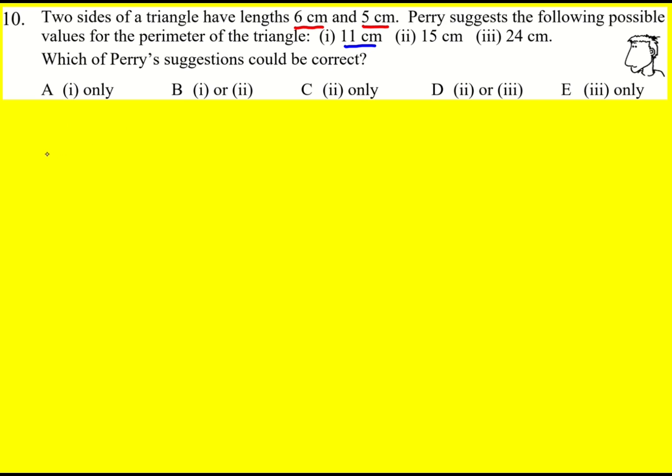So to get a perimeter of 11 we'd have 6, 5, and 0 actually as our possible values. That would give 11, but there's no way you could then create a triangle from that. You just get these two sides, not a triangle. So that one is out.